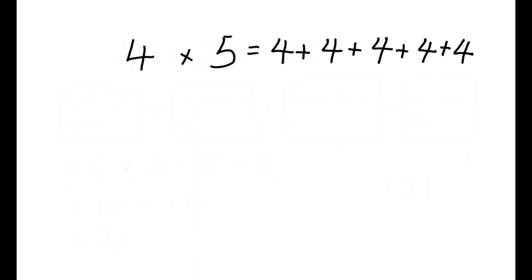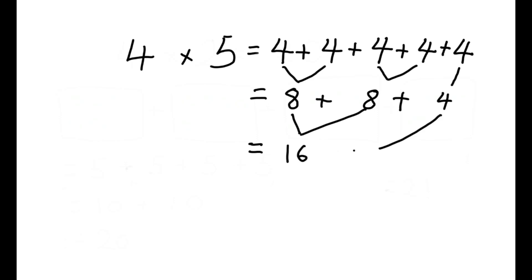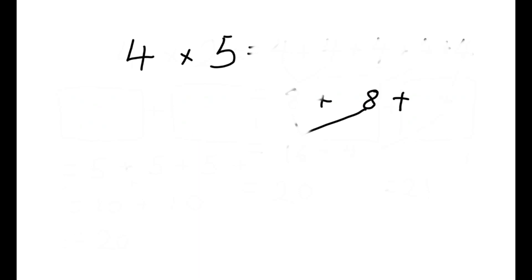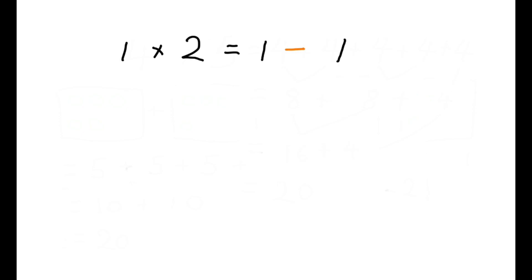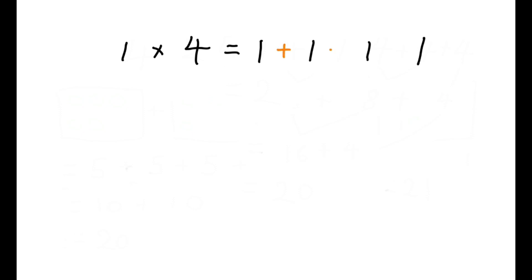4 times 5 is 4 plus 4 plus 4 plus 4 plus 4, which equals to 8 plus 8 plus 4, which equals to 16 plus 4. The answer is 20. 1 times 2 means adding 1, 2 times to 0, so there are two 1s, and sum them up: 1 plus 1. The answer is 2. 1 times 4 means adding 1, 4 times to 0, so there are four 1s: 1 plus 1 plus 1 plus 1, which equals to 2 plus 2. The answer is 4.